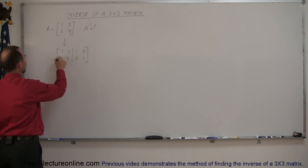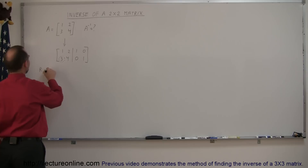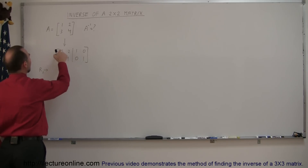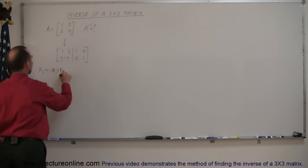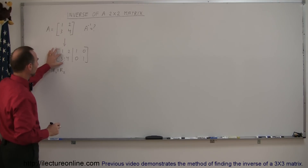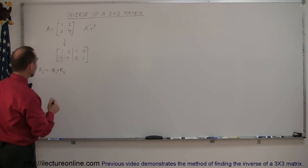Now we want to get rid of this number here. The way to do that is to take the second row, where the 3 is, and replace it by negative 3 times row 1 added back to row 2. That will ensure this becomes a 0. You must do the same with all other elements in that row.